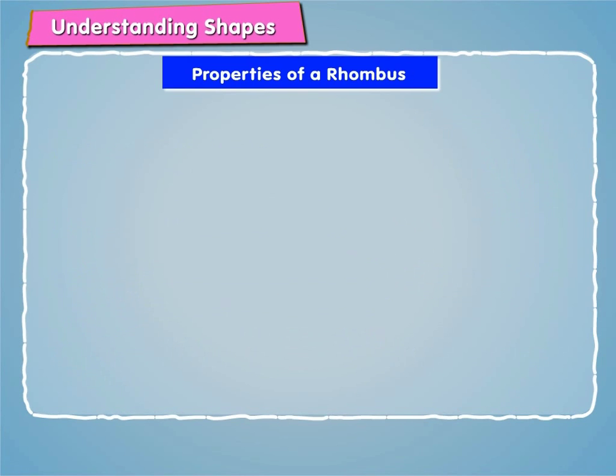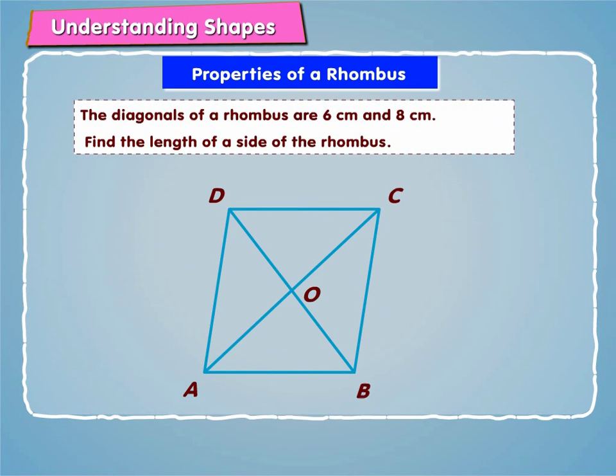Let us take an example. Let the diagonals of a rhombus are 6 cm and 8 cm and we need to find the length of a side of the rhombus.